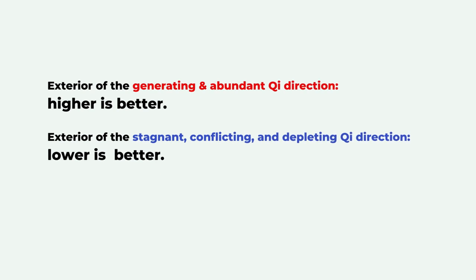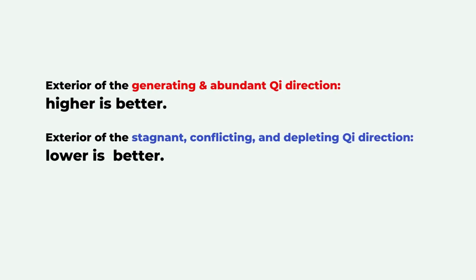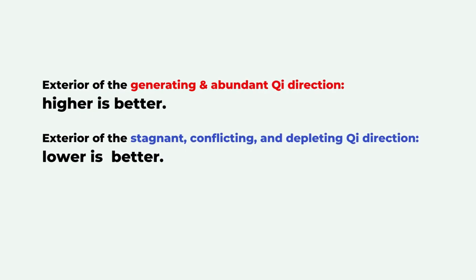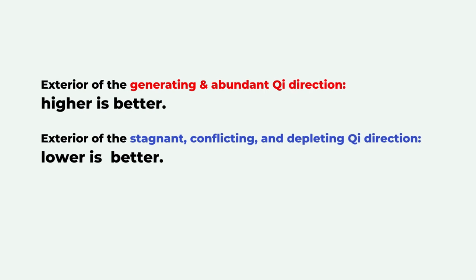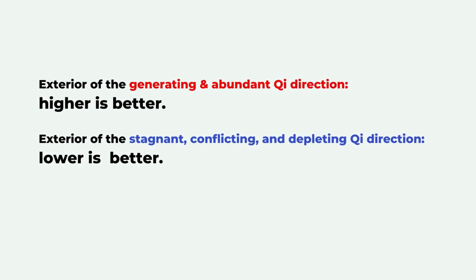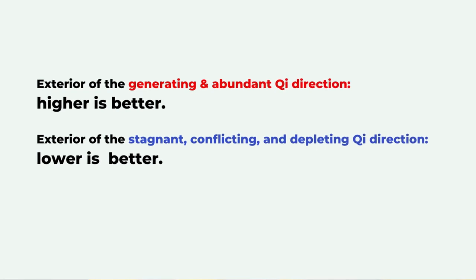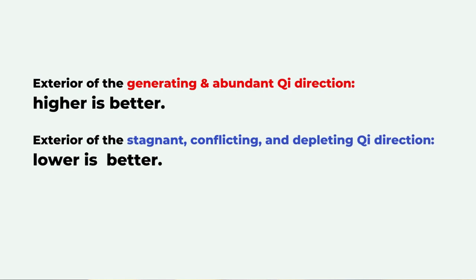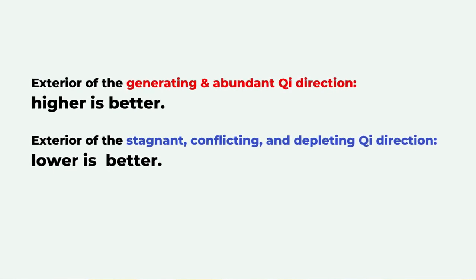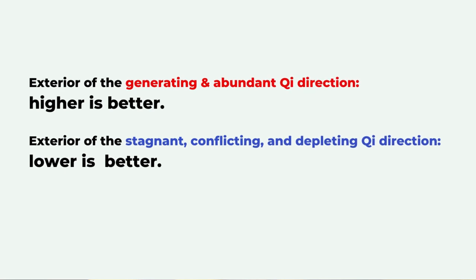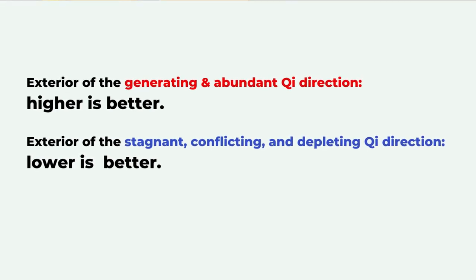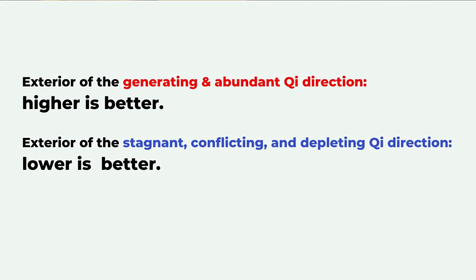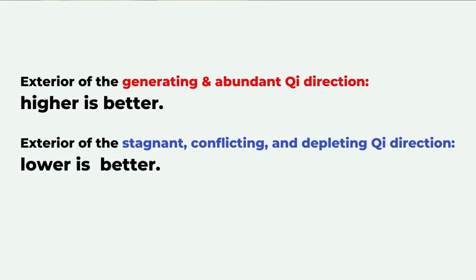Another way to analyze the feng shui is to look at the exteriors. For the generating and abundant Qi directions, it's better to have higher structures, landscape, or mountains outside of the building. For the directions of stagnant, conflicting, and depleting Qi, it's better to have lower structures or lower landscaping. This way the auspicious energy can be activated and the inauspicious energy will not be triggered.